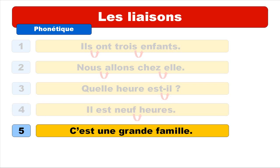Next example: c'est une grande famille. So you can see the liaison between c'est and une — the liaison sounds like T. So we get c'est une, c'est une. And the whole sentence: c'est une grande famille. Repeat: c'est une grande famille.